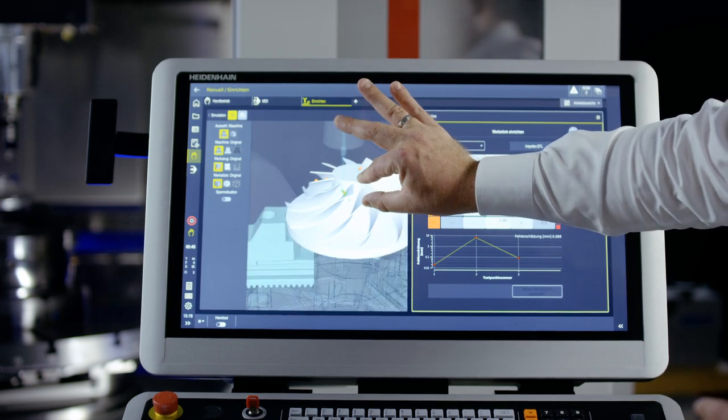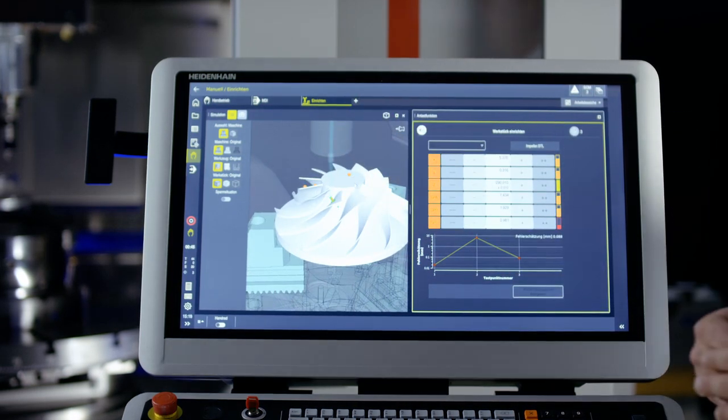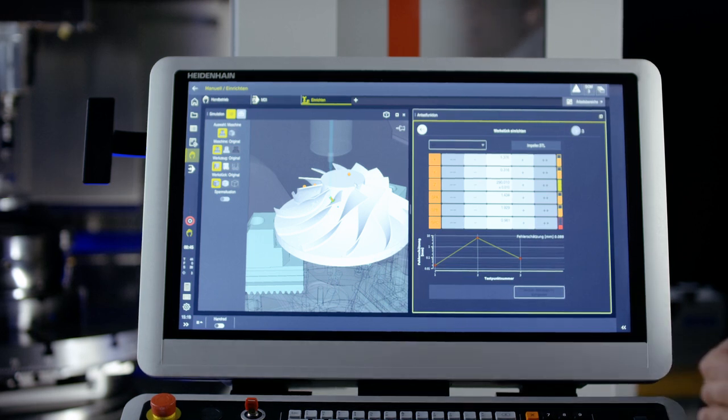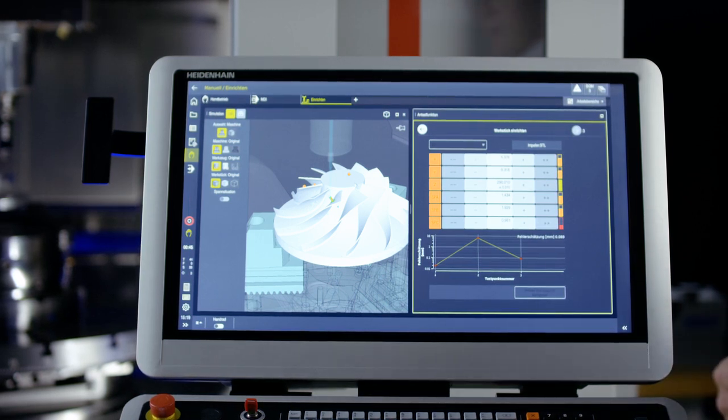Now we've clamped a more complex workpiece, simply to show you what all the workpiece measurement function of the TNC7 is capable of. Now the more complex workpiece. In our example, it is an impeller that needs reworking. I've already opened the impeller and set the first probing points.